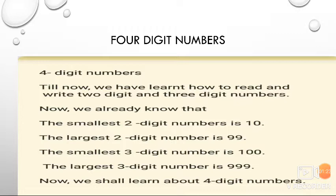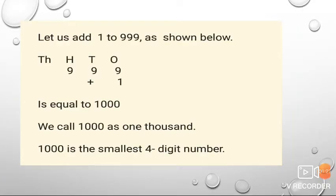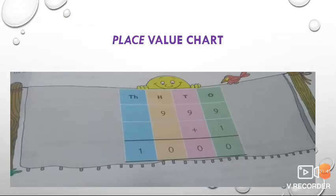Now we shall learn about 4-digit numbers. Let us add 1 to 999 as shown below. First of all, arrange them in the form of a place value chart and add 1 to it, which equals 1,000. We call 1,000 as one thousand. 1,000 is the smallest 4-digit number. Here is a place value chart for you.